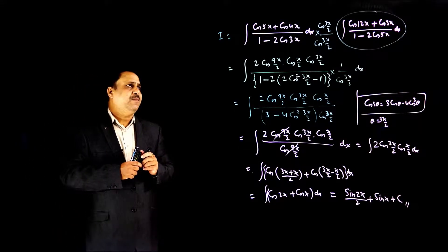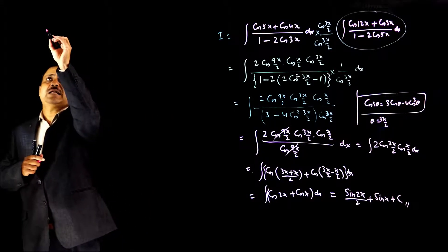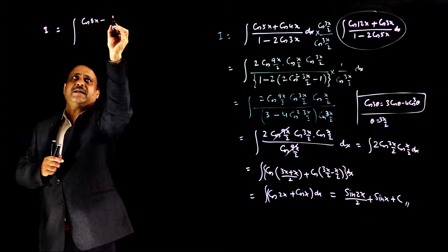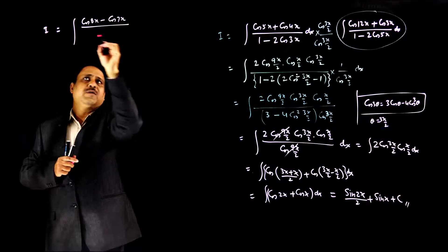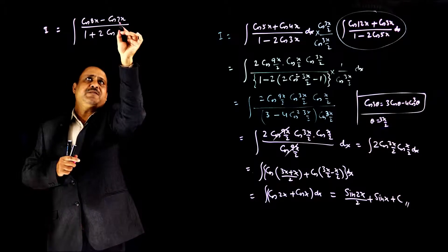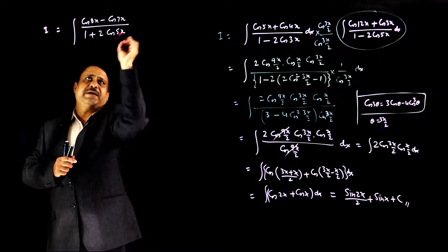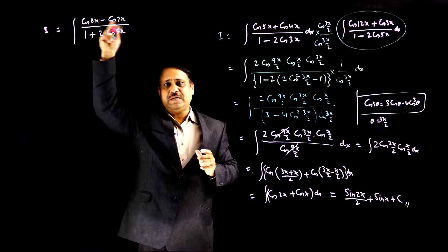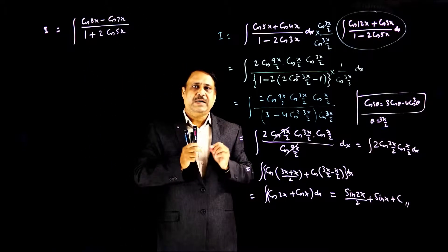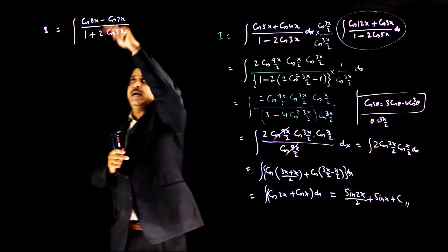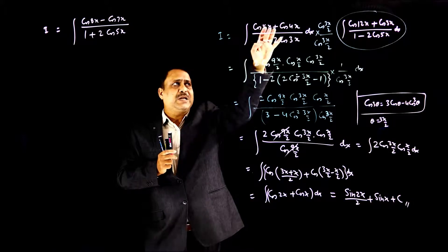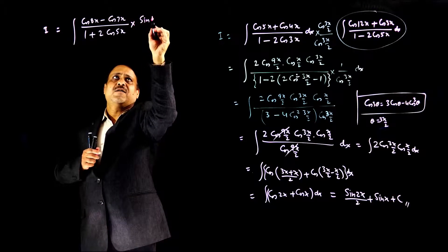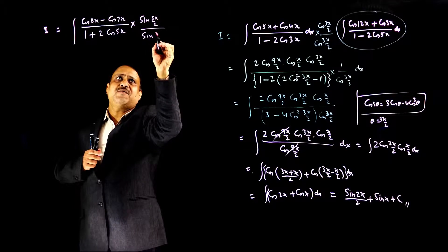Similarly, suppose I have one more problem — another type. The question is: integration of (cos8x − cos7x) / (1 + 2cos5x) dx. Here 8 + 7 = 15, and 15 divided by 3 is 5. This is also a similar problem. But what is the difference? In the first problem we had plus-minus; here we have minus-plus. So when it is a minus sign in the numerator, I will multiply and divide by sin(5x/2).